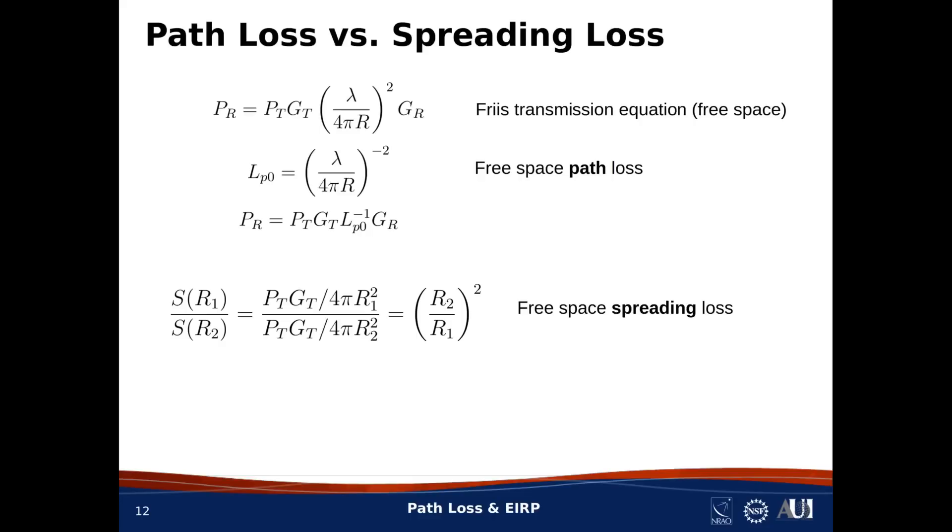So what do we make of this? Well, the frequency dependence of path loss entered into our analysis when we replaced the effective aperture with the receive gain. Go back a few slides for a reminder about that step. So the wavelength dependence of path loss is really just accounting for the relationship between receive gain and effective aperture, and really has nothing to do with the loss between antennas. And this is where people get confused.